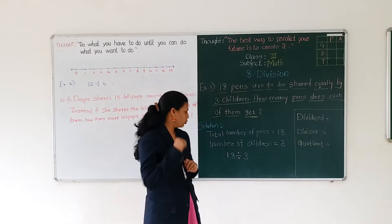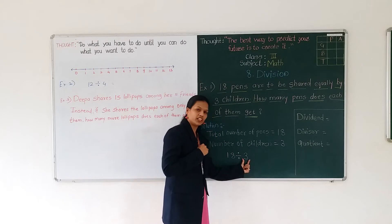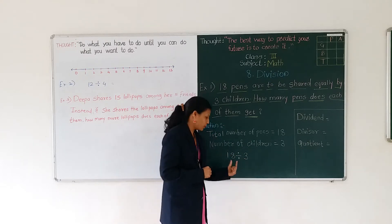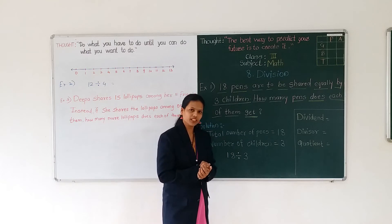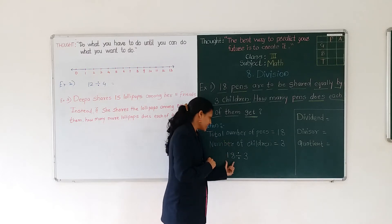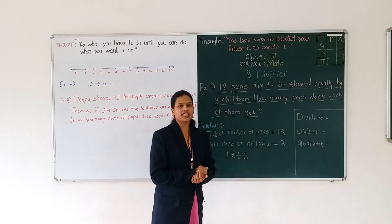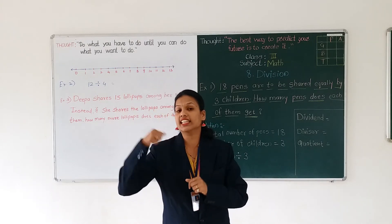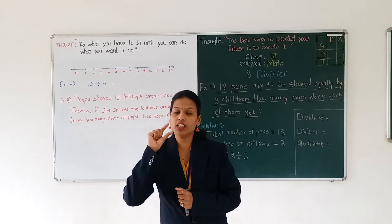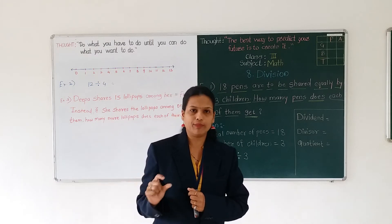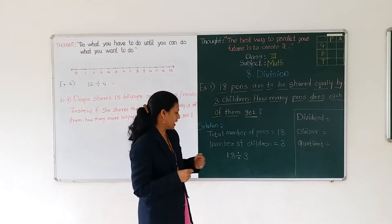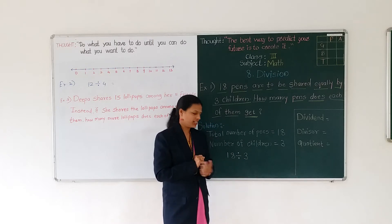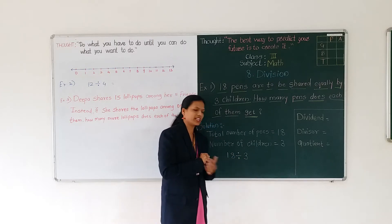Now, what we have to do: take the number of the divisor — that is number 3. Start a table of 3 up to that number. If the number is there, then we get the answer. If the number is not there, then what we have to do, we will see in the next session. But before that, we just check and find out if number 18 is there or not. Start the multiplication table of 3.